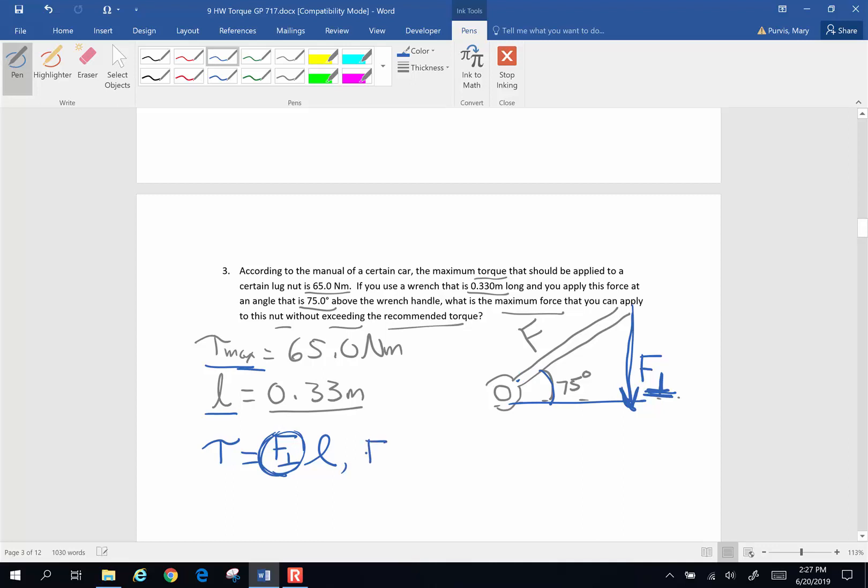Maximum force is going to be torque divided by lever arm, 65 newton meters divided by 0.33 meters. And that's 65 divided by 0.33. So the force perpendicular is going to be 197 newtons. That is this value. And once I put 197 newtons in that, I'm going to solve for the hypotenuse.